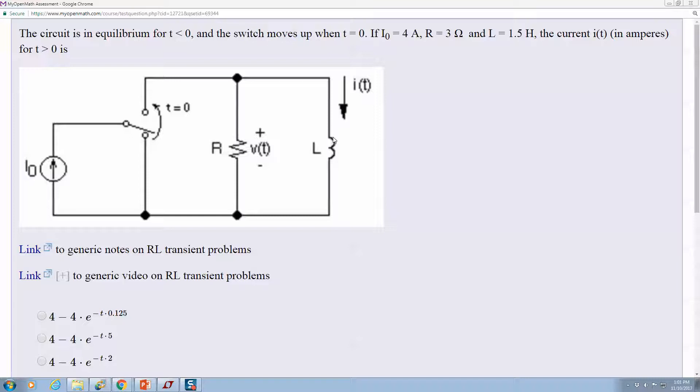All the current will be going through the resistor, and then as time goes on it'll all go through the inductor. That's because that's the nature of inductors and resistors.